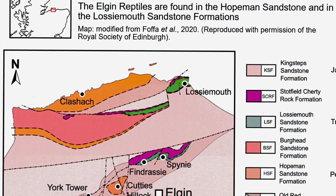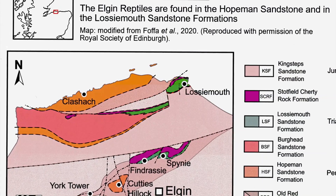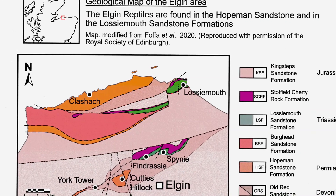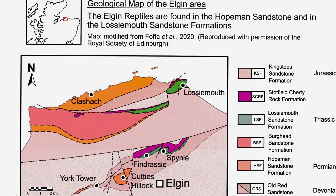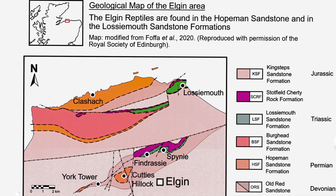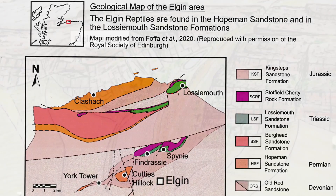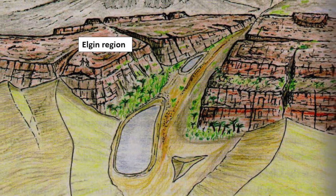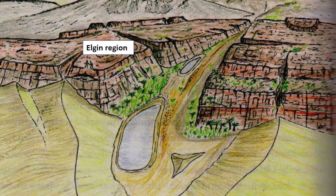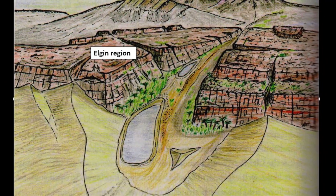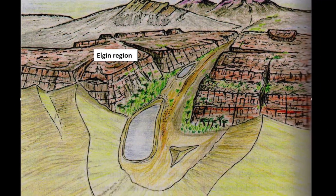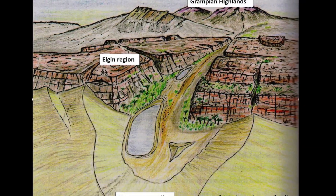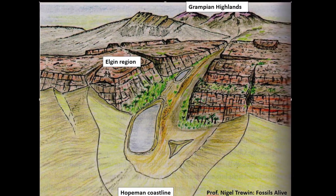Hopeman gives its name to the sandstone formation that can be found across this area. These sandstones have yielded important fossils from sites shown on this map. This sketch shows the coastal dunes banked up against older rocks to the south. Although this was a desert environment, there would have been seasonal rainfall, giving rise to ephemeral lakes and streams.